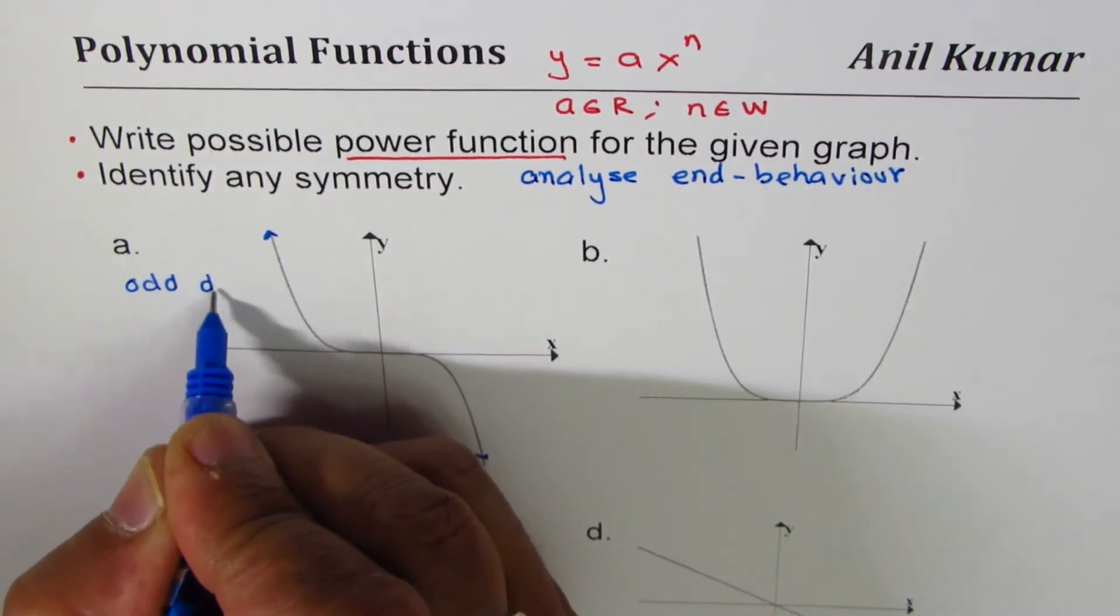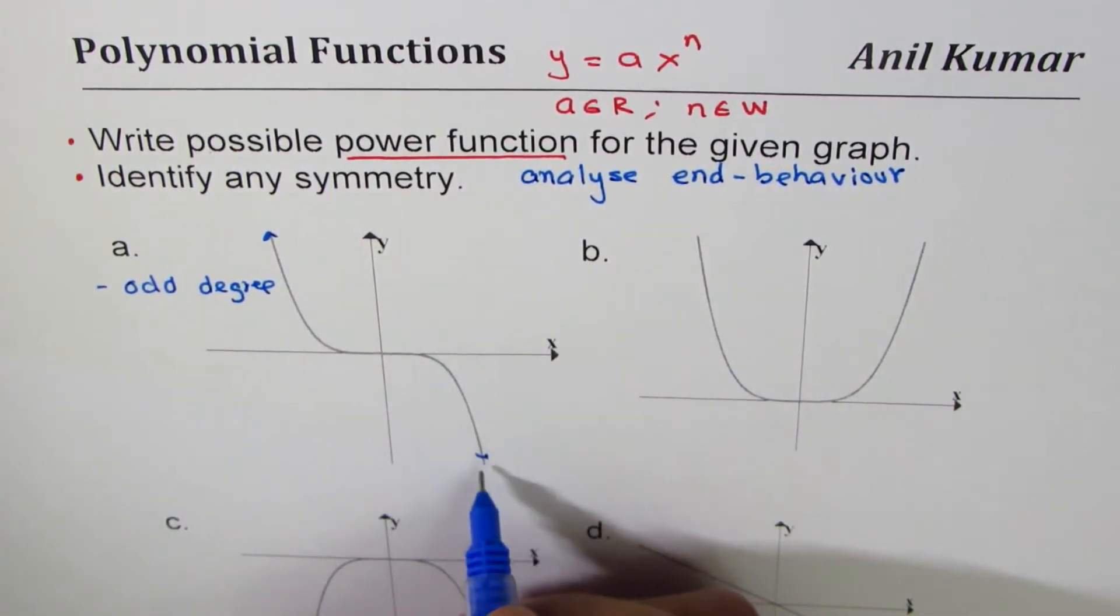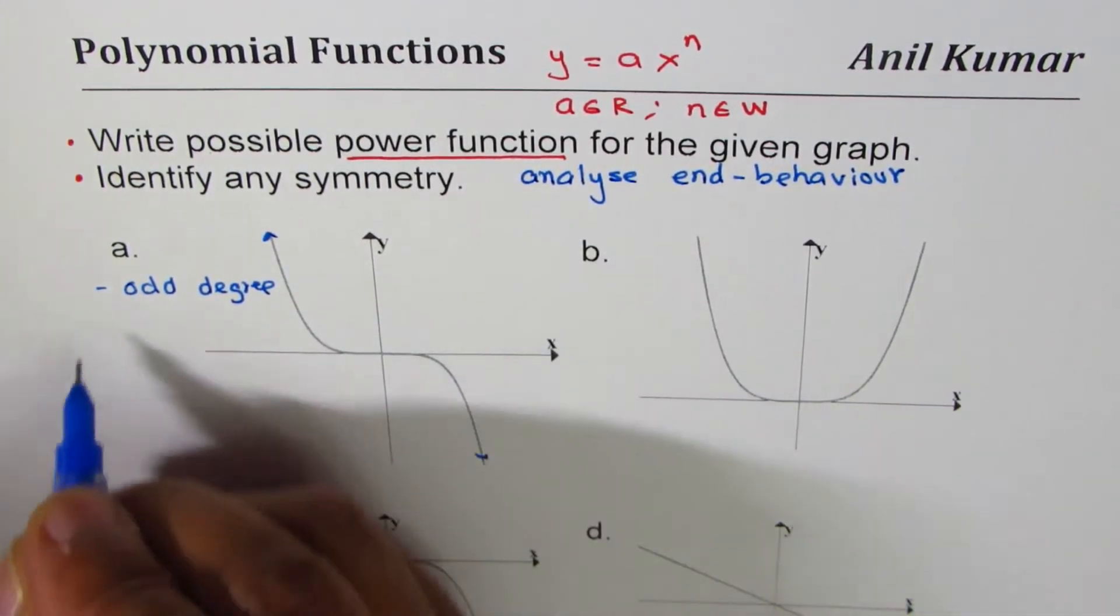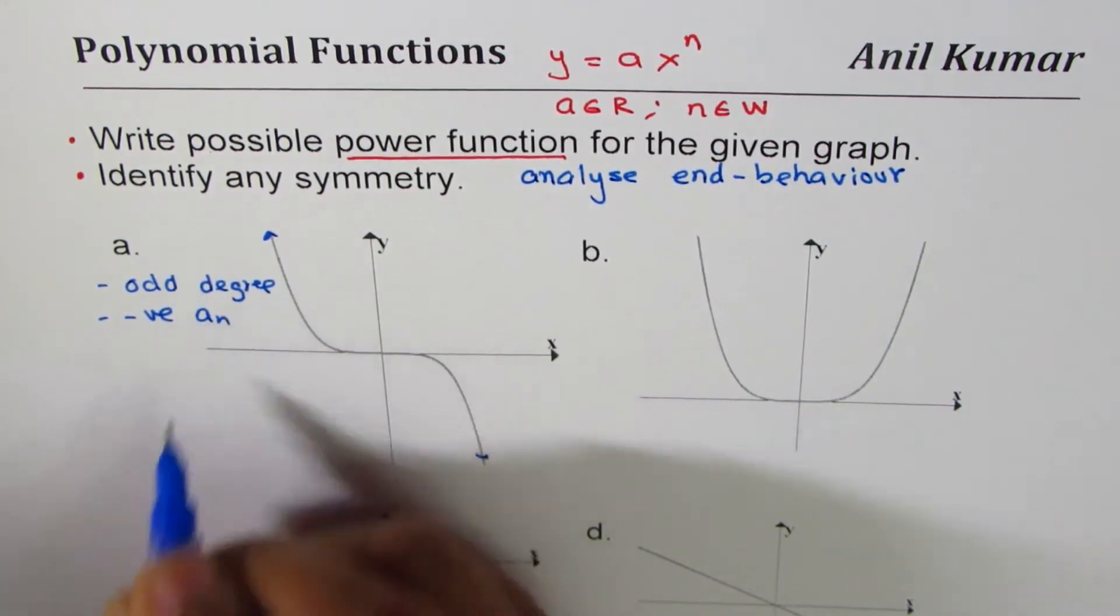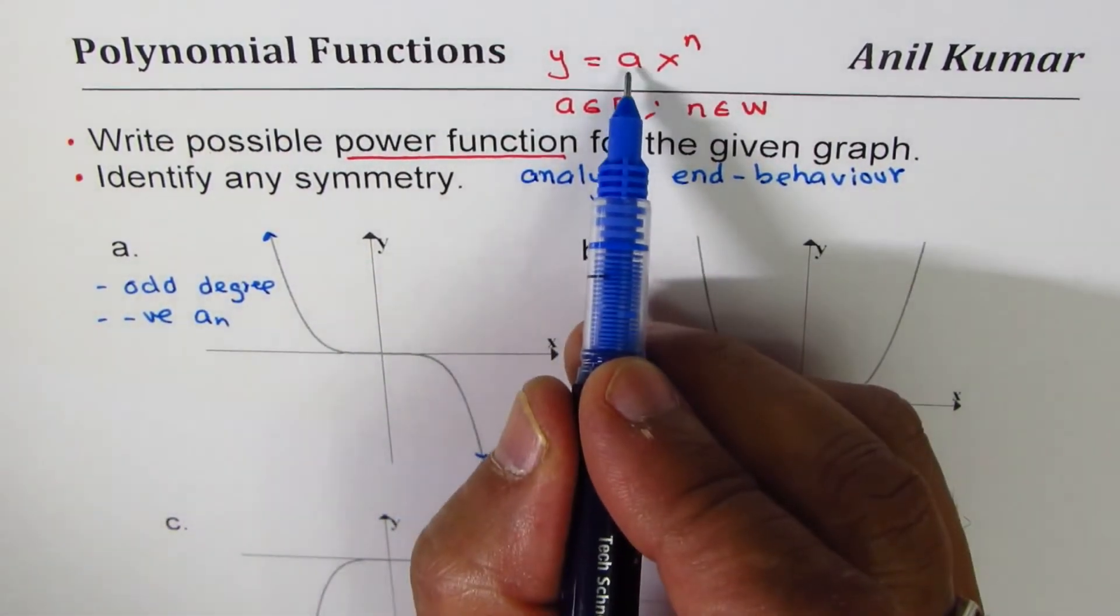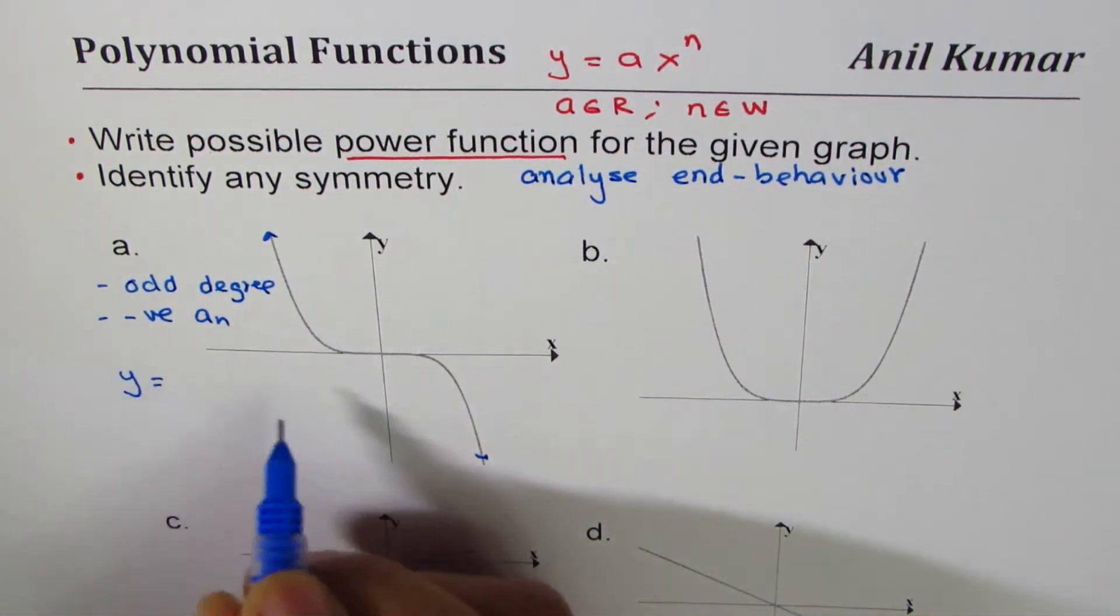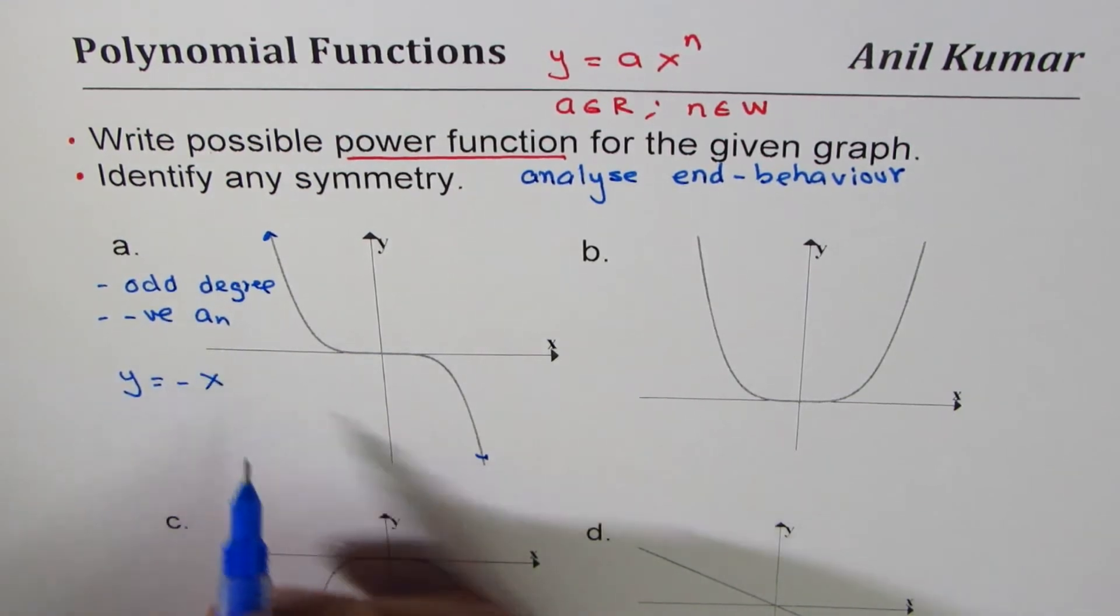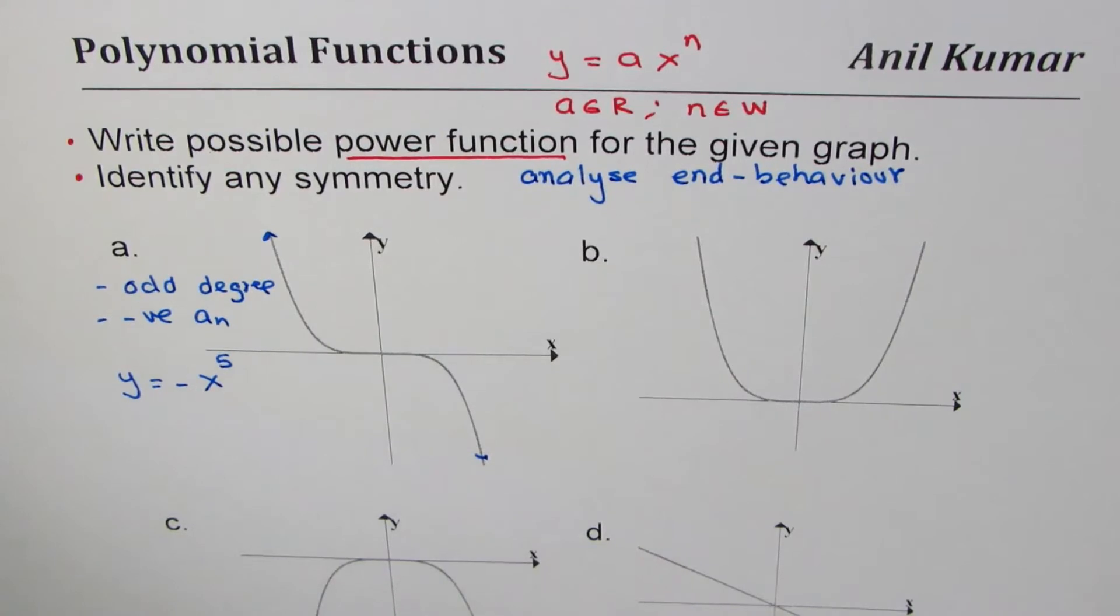And it ends in quadrant four, that means negative coefficient, negative leading coefficient, negative a value. And therefore we can write this as y = -x^5. So that's how you get your equation.